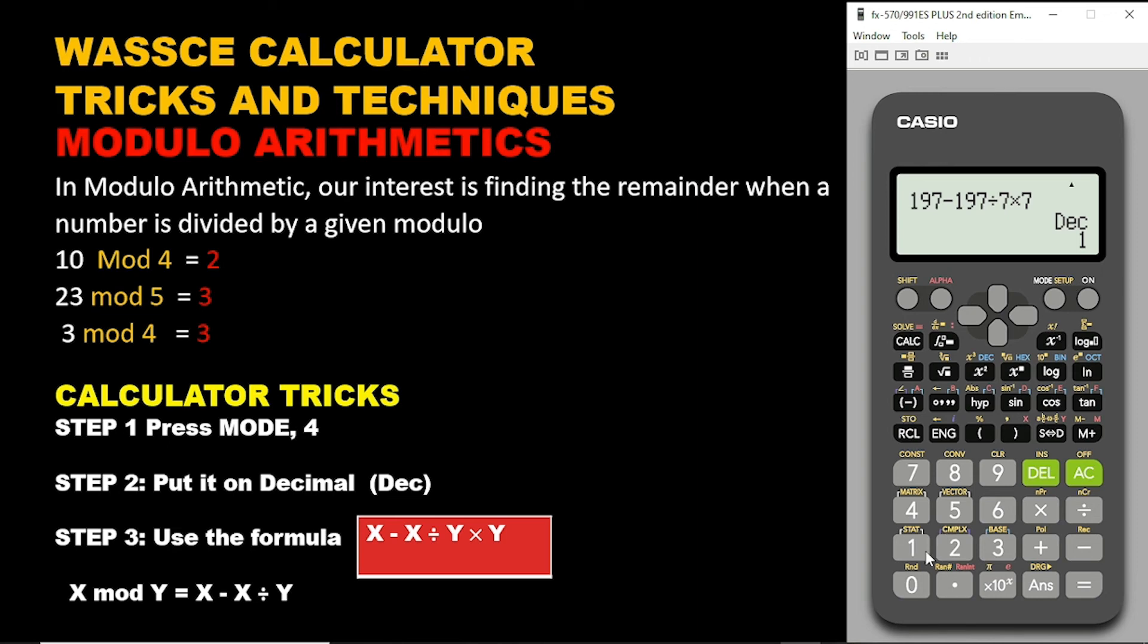Now let's try a bigger number. Let's say we have 2897 in modulo 17. So x is 2897 and the y is 17. So 2897 minus 2897, then we divide that by 17, so 17 times 17. Bam, 7.